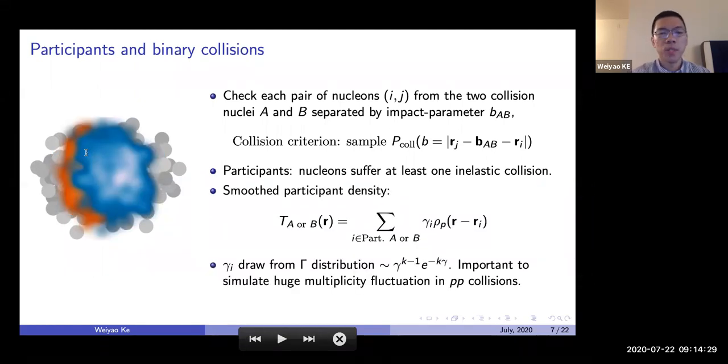Again, nucleons are extended objects. So for each of the participants, they actually contribute a finite patch in the transverse area. We smooth the contribution from each nucleon, each participant nucleon, by their two-dimensional density functions to define the so-called participant densities. The participant densities for each nuclei are labeled by T_A or T_B, which is simply summing all the contributions from your participants. Here, each contribution is also modulated by a unit mean gamma distribution random variable.